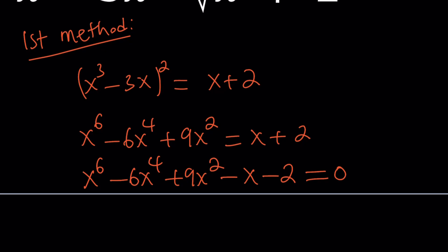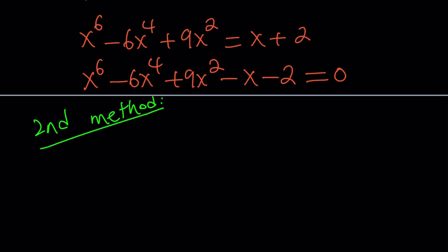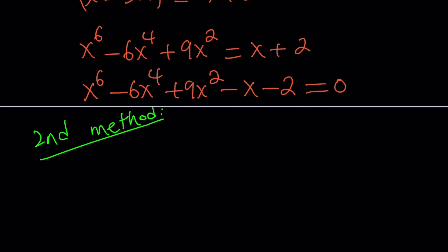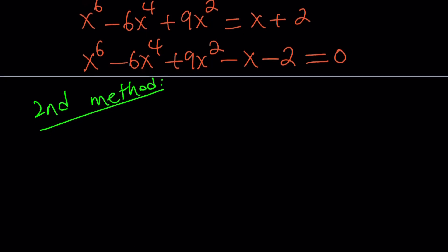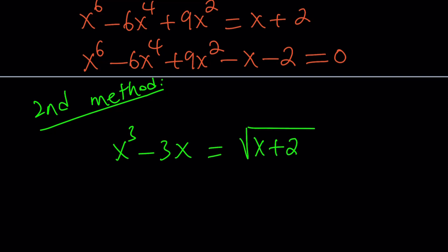The second method has to be something special. The first method is kind of brute-force, and it leads to a hexic equation which is probably impossible to solve by general methods. You can definitely use numerical methods and approximations, but solving this in the general case is impossible. The second method is motivated by the presence of something under the radical, and also the expression on the left-hand side should give you an idea. We're going to use some inequalities and trigonometry.